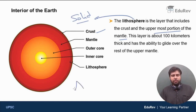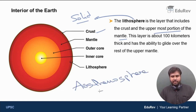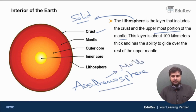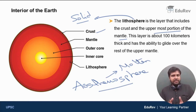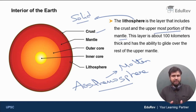Below the lithosphere, you have a layer called asthenosphere. Asthenosphere is molten. Due to the high temperature found there, the material present there is molten — when you say molten, it is semi-solid.